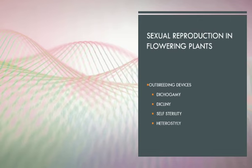Or dioecious, bearing male and female flowers on different plants. Examples are mulberry and papaya. Monoecious nature prevents autogamy but not geitonogamy. Dioecious nature prevents both autogamy and geitonogamy.